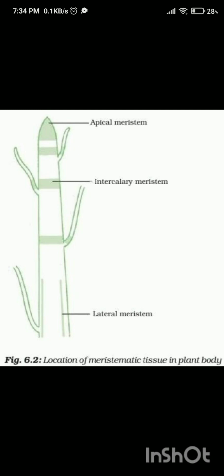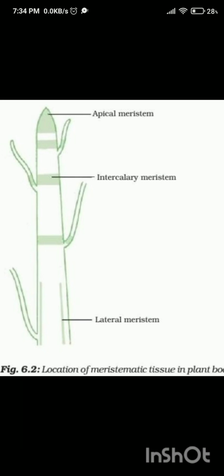This tissue is called meristematic tissue. Meristematic tissues are found at the tips of roots and shoots in plants. They are made up of cells that divide rapidly, creating new cells that can become different types of plant tissues, like the ones you find in leaves, stems, and roots. Meristematic tissues are classified into three main types based on their location and function.